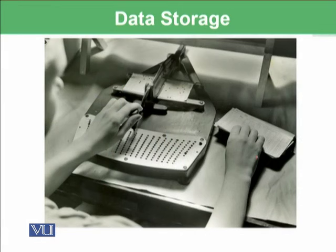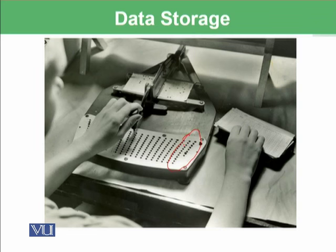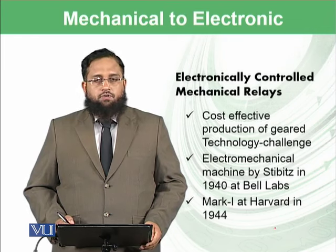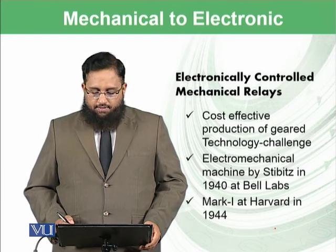Here you can see the punch card with small holes. Each hole or combination of holes represents some data — for example, three holes followed by three empty spaces might represent the digit one. This technology enabled input of an algorithm from outside the device. The punch card developed by Babbage made it possible to take input of an algorithm externally. However, such technologies were not produced cost-effectively at that time, so they became obsolete.